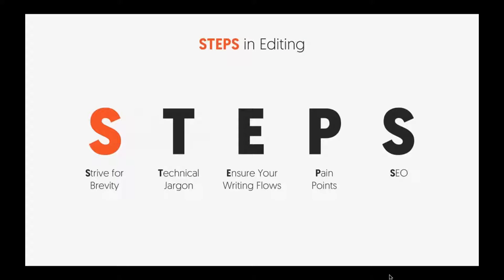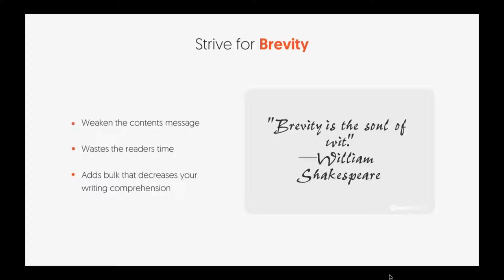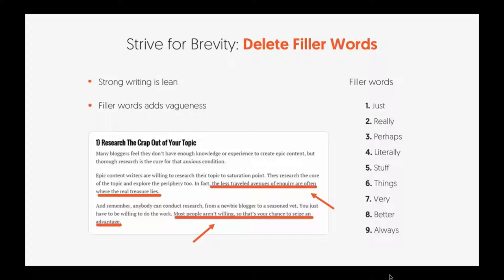When you're editing, I like to take five steps — we've named them STEPS. Let's start with S: strive for brevity. The big problem I'm seeing is that when I tell people to have thorough content, they start writing 3,000-word pieces and end up keyword stuffing. It weakens your content, makes it too keyword-rich, adds bulk, and wastes the reader's time. You want your content to be strong and lean — filter out vague words, make them more thorough, and get to the point.